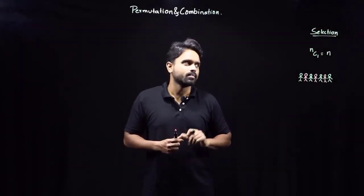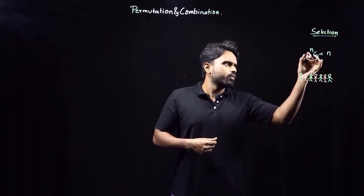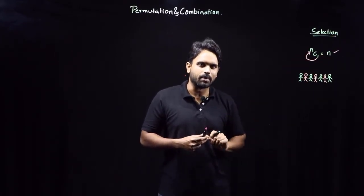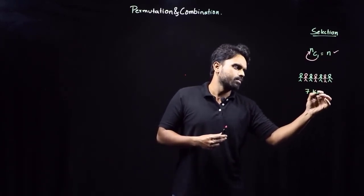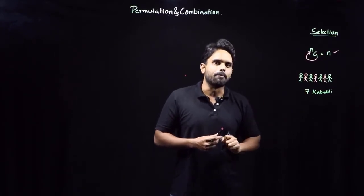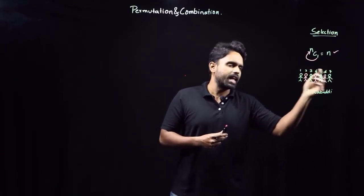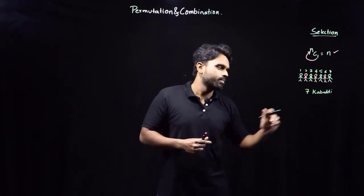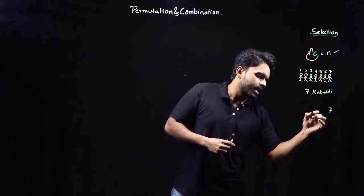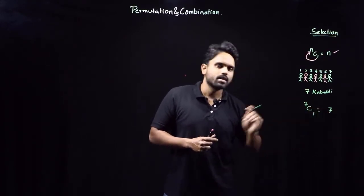The first identity: NC1 = N. Selecting one person out of N can be done in N different ways. For example, from a Kabaddi team of 7, selecting one captain can be the 1st, 2nd, 3rd, 4th, 5th, 6th, or 7th person — seven different ways. So 7C1 = 7, 13C1 = 13, 9C1 = 9.